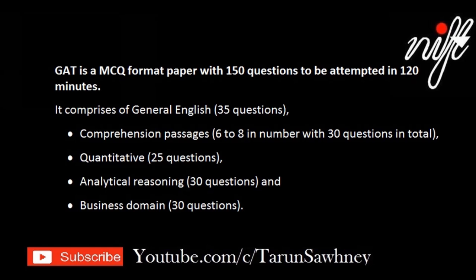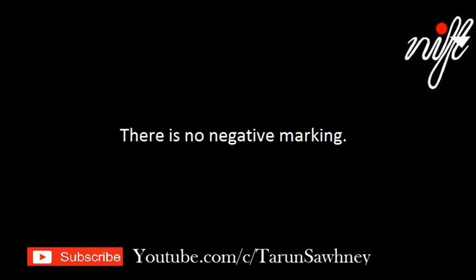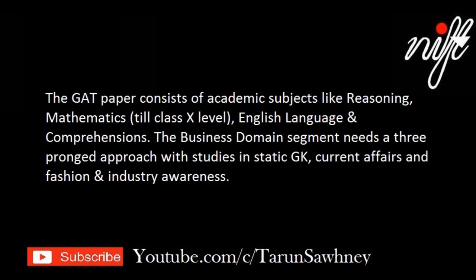The remaining sections include Quantitative with 25 questions, Analytical Reasoning with 30 questions, and Business Domain with 30 questions. There is no negative marking. The GAT paper consists of academic subjects like reasoning, mathematics up to class X level, and English language and comprehensions.